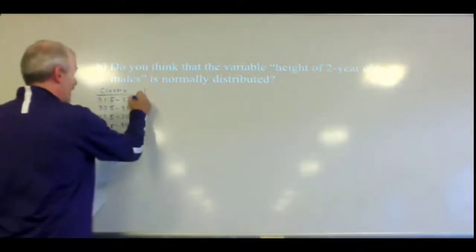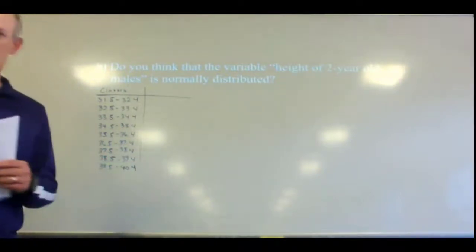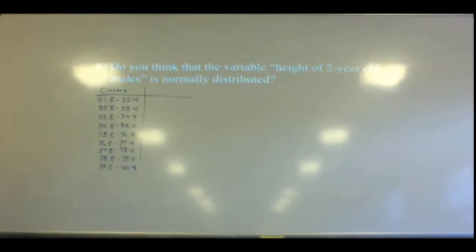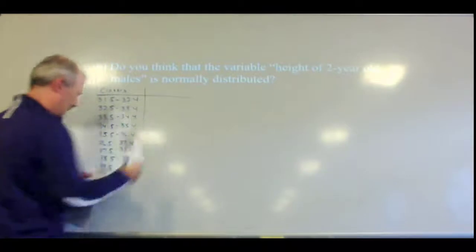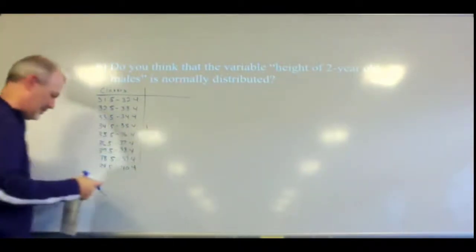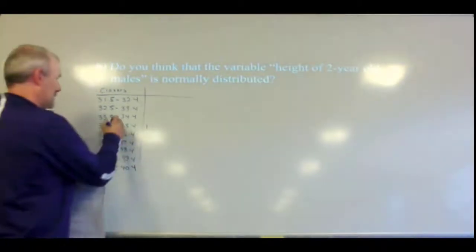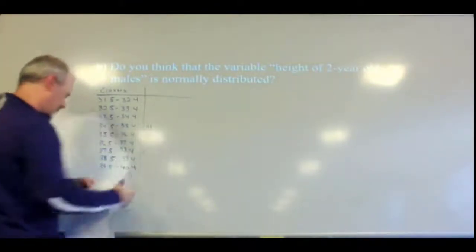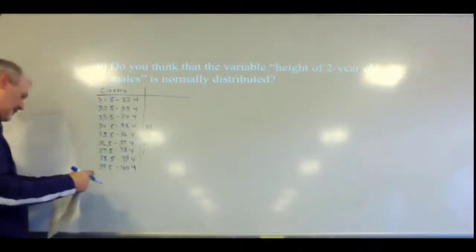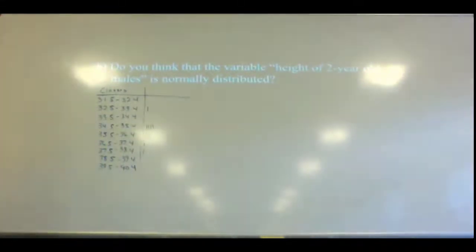So 39.8 — you see a 39.8? Yes. So 39.5 to 40.4. We're just going to put in tally marks to make it a little easier. 36.0 goes in here. 36.2 goes in here. 34.8 goes in right here. 36.0 back here. 34.6 is right here. 38.4 is right here. 35.4 is right here. 36.8 is right here. 34.7 is right here. 33.4 is right here. Does everybody understand what we're doing — just putting them into groups right now?